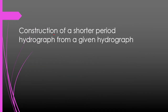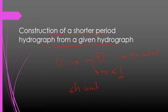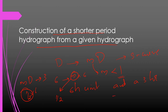Now we are going to deal with a numerical problem of constructing a shorter-period hydrograph from a given hydrograph — specifically, constructing a unit hydrograph of duration MD from a unit hydrograph of duration D. Here, M is less than 1 and is not an integer, so we will use the S-Curve method. We are given a 6-hour unit hydrograph and we need to construct a 3-hour unit hydrograph. So D equals 6, MD equals 3, meaning M equals 1/2 or 0.5.